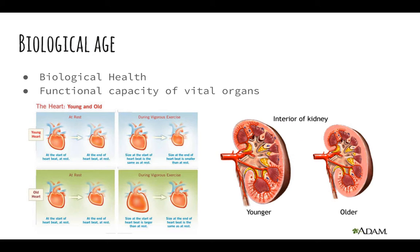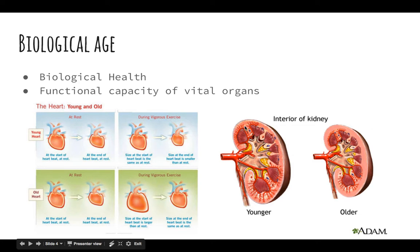Next is the biological age, and this is your biological health and the functional capacity of your vital organs — that's the main way this is measured. If you have a young biological age, you are expected to live longer because your organs are healthier. Here are some examples of how organs can age: the vessels aren't reaching the edge, the kidney looks a little smaller, and during vigorous exercise the heart is working very hard and is much larger than a young heart.